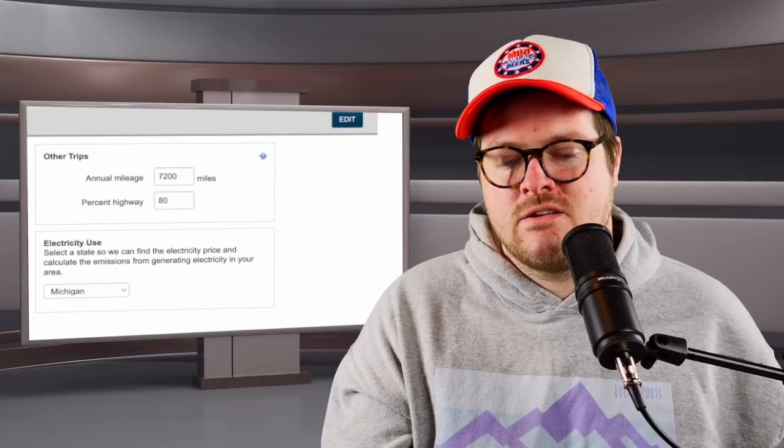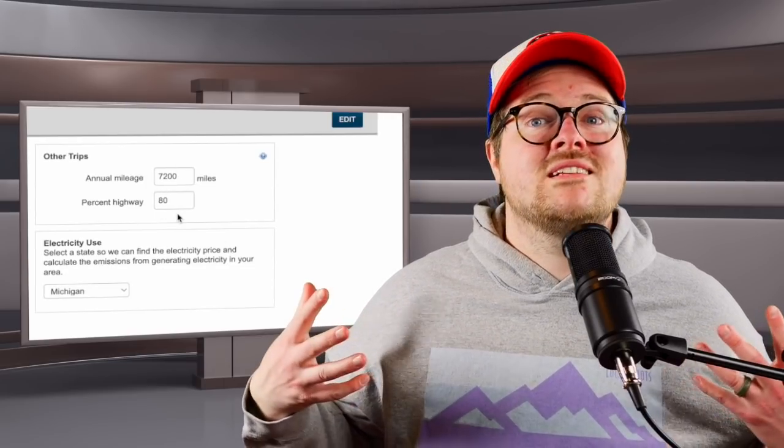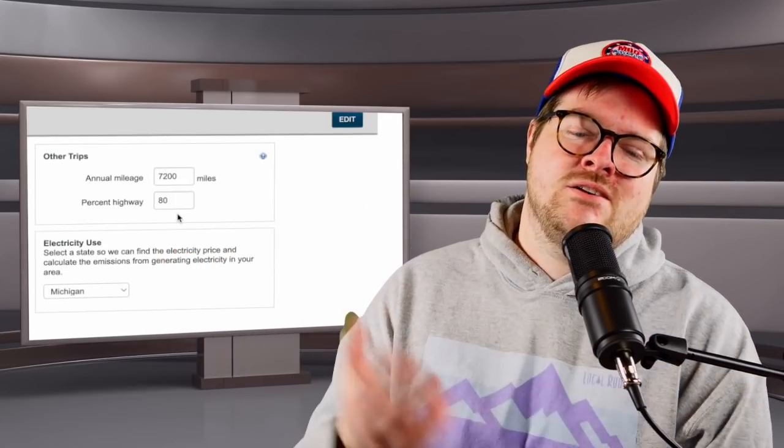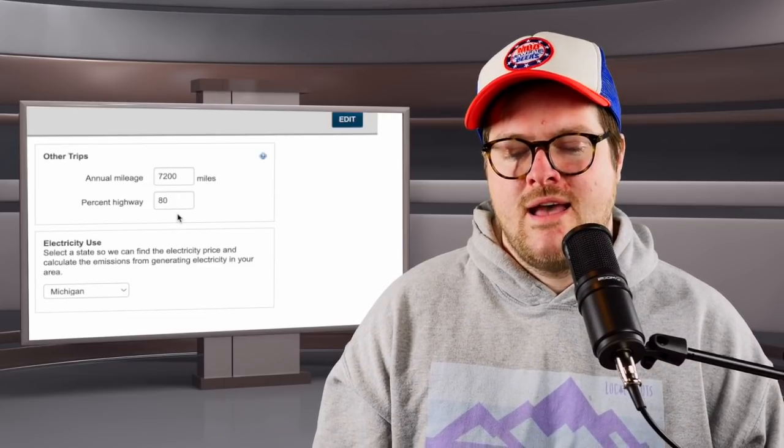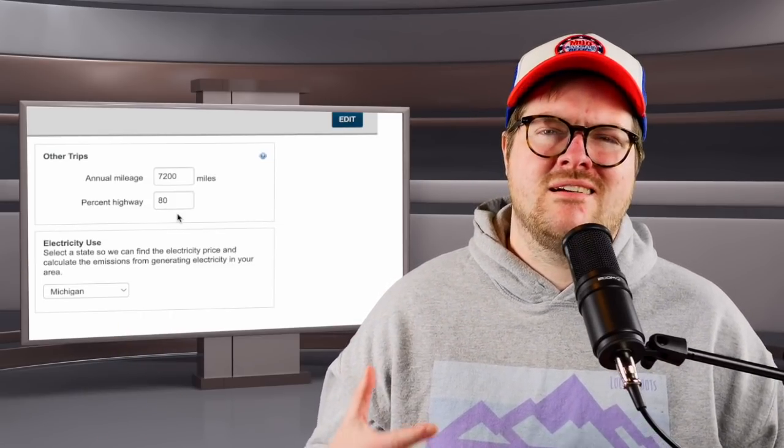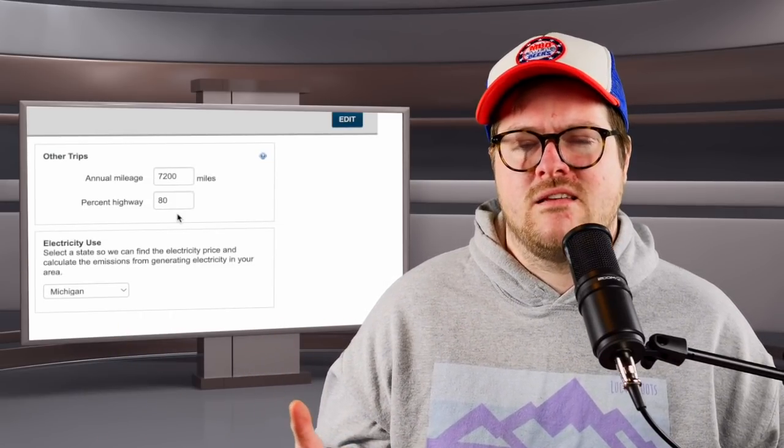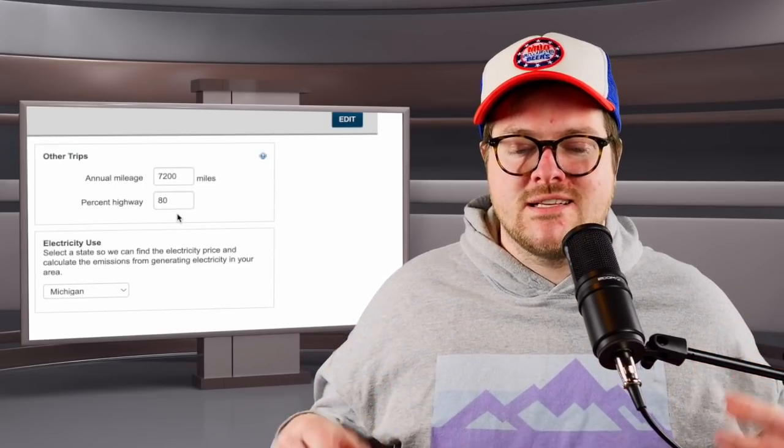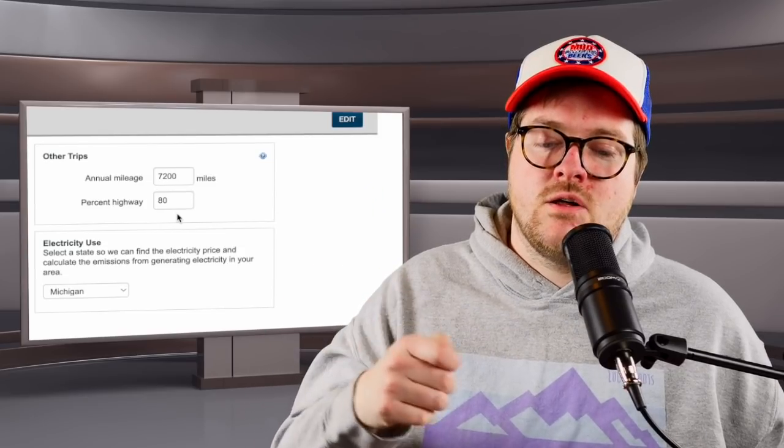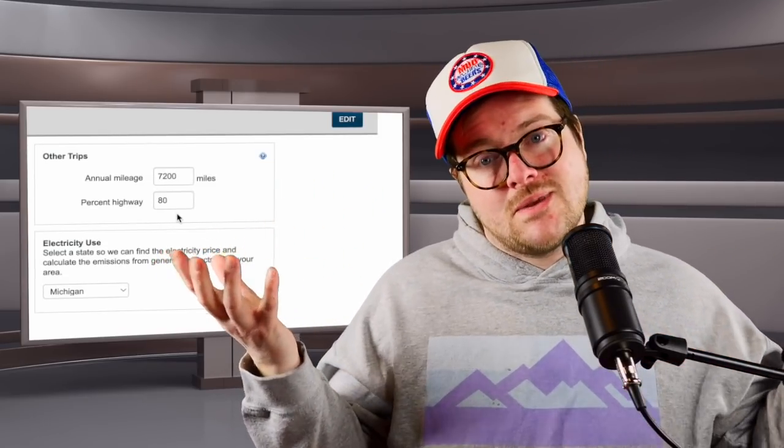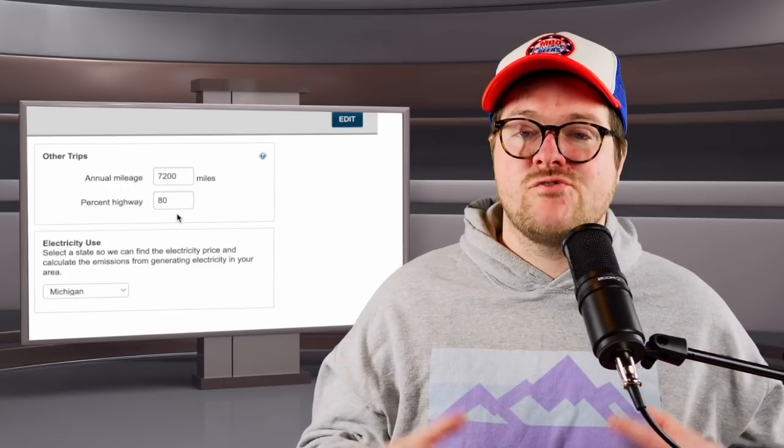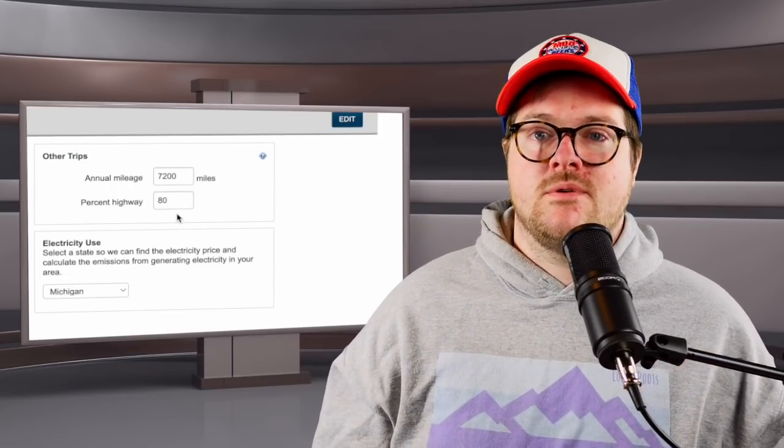However, I do have other trips. So in this other column, I averaged about once a month going on a 600 mile trip. Now this is way overestimating, but I think it's important to overestimate. So I'm adding an extra 7,200 miles. And what's great is it calculates highway mileage versus city mileage. So 80% because most trips are on the highway. Those are the numbers I'm using. Also for electricity use, it's going off of Michigan's kilowatt per hour average. I just want you to know all the stats we're going to see is based off of what you see here.